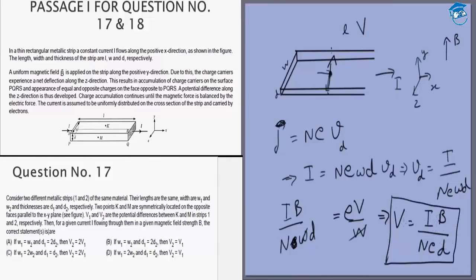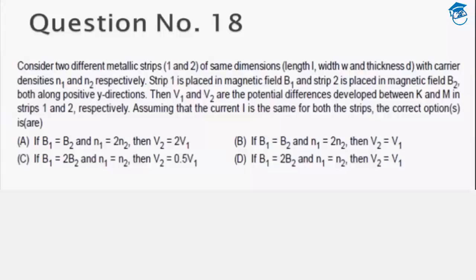Now this is the equation with which I can solve both the next questions. Question number 17: W doesn't even matter, so W1 equals W2 or 2W2 doesn't matter. If D1 equals D2, then V1 will equal V2 because all four other things are same. And if D1 is twice D2, then V1 will be half of V2. So the answer to question 17 will be A and D.